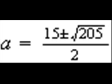Plugging a, b, and c into the appropriate places and simplifying leads us to a solution of a equals 15 plus or minus the square root of 205 divided by 2, which cannot be simplified any further.